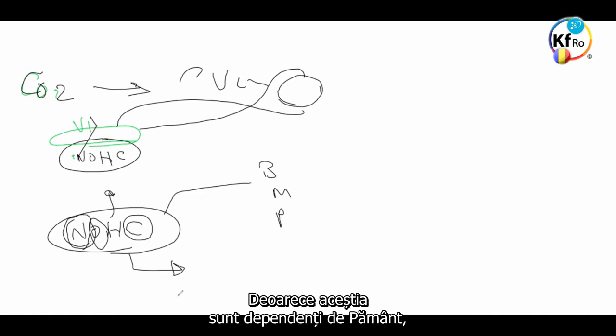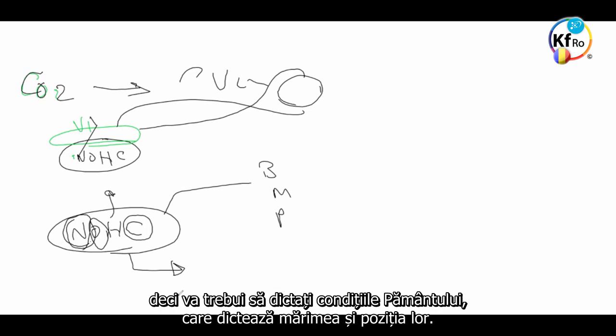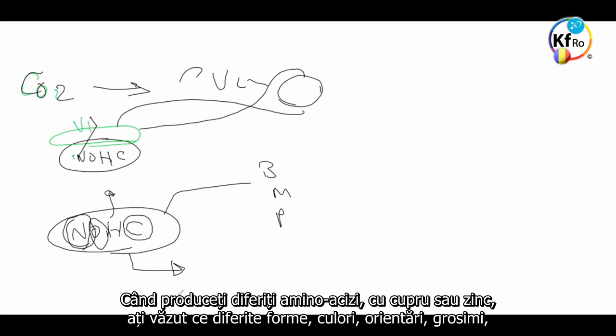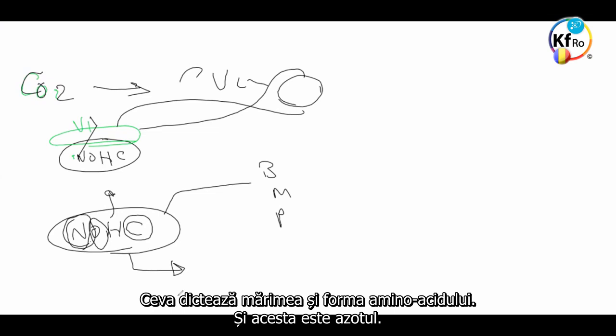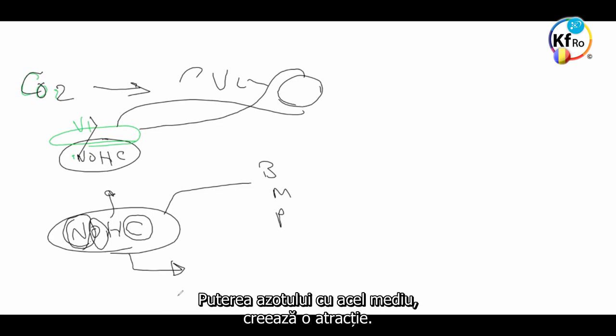Because these are Earthly dependent, you have to dictate the condition of the Earth, which dictates their size and position. When you produce different amino acids with Copper or Zinc, you saw how different shape and color and orientation and thickness of the amino acid on top of the box, on top of the water. So this should have given you an indication. Something is dictating the size and shape of the amino acid, and that is the Nitrogen. The strength of the Nitrogen which that environment creates and attracts.